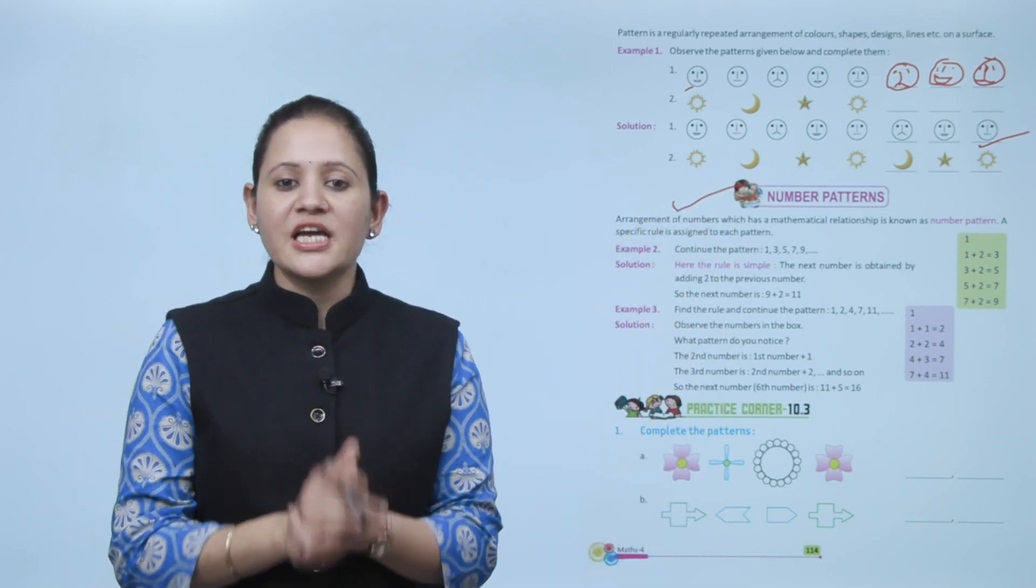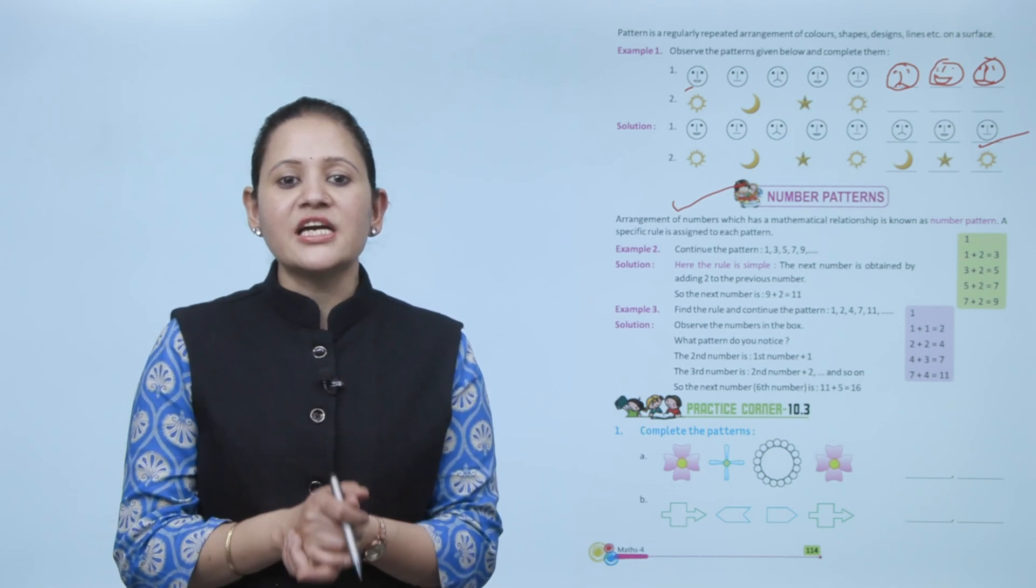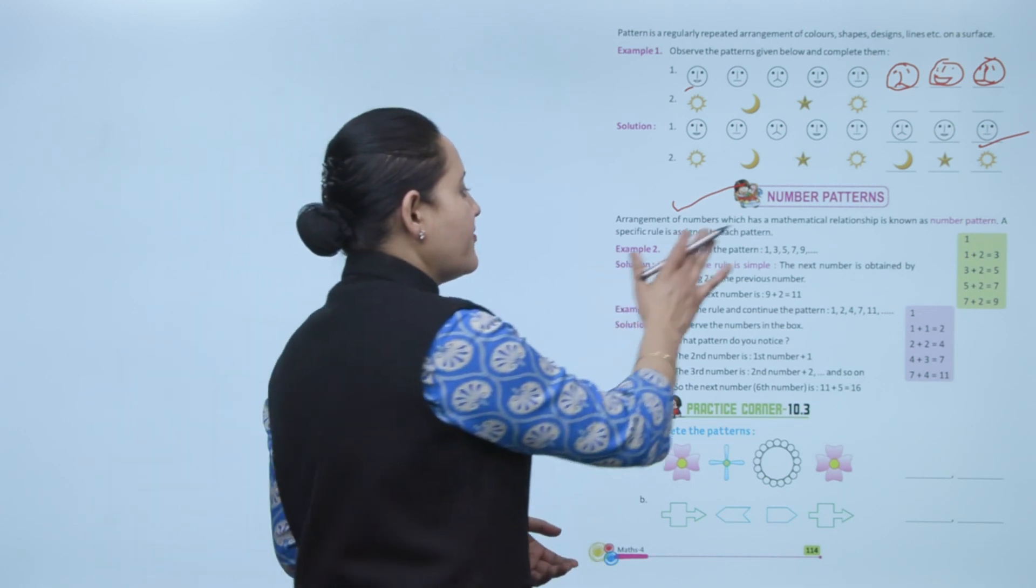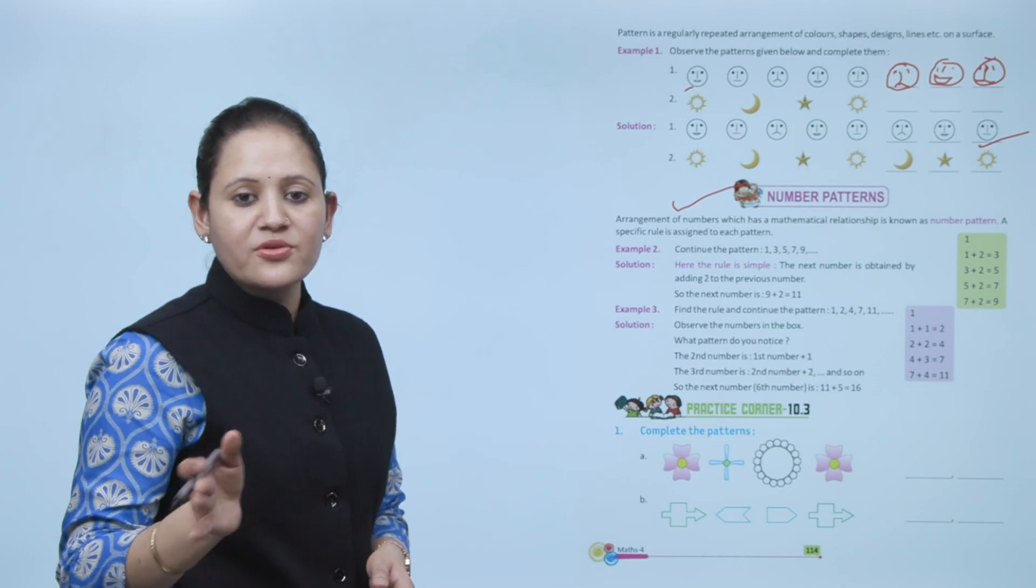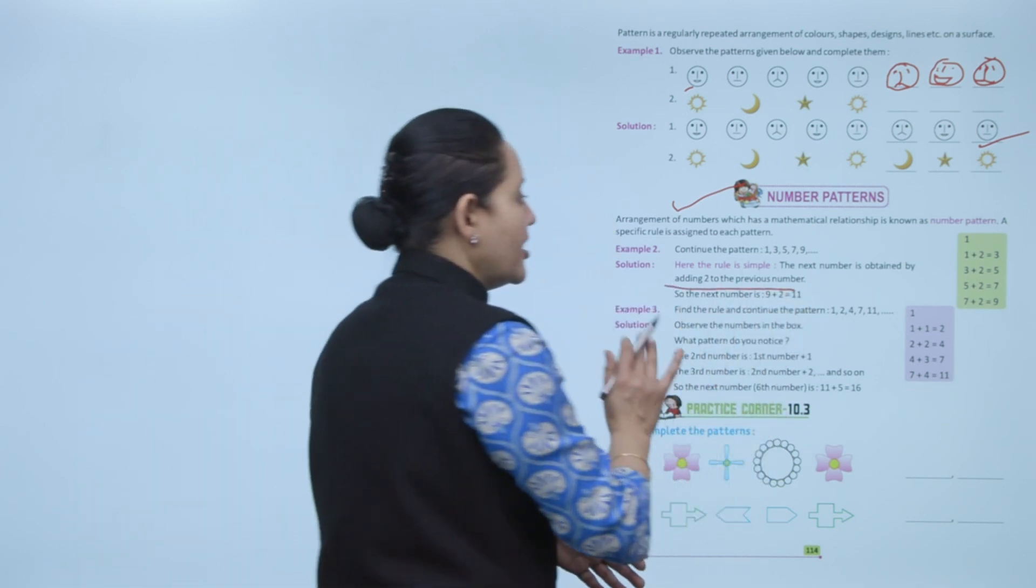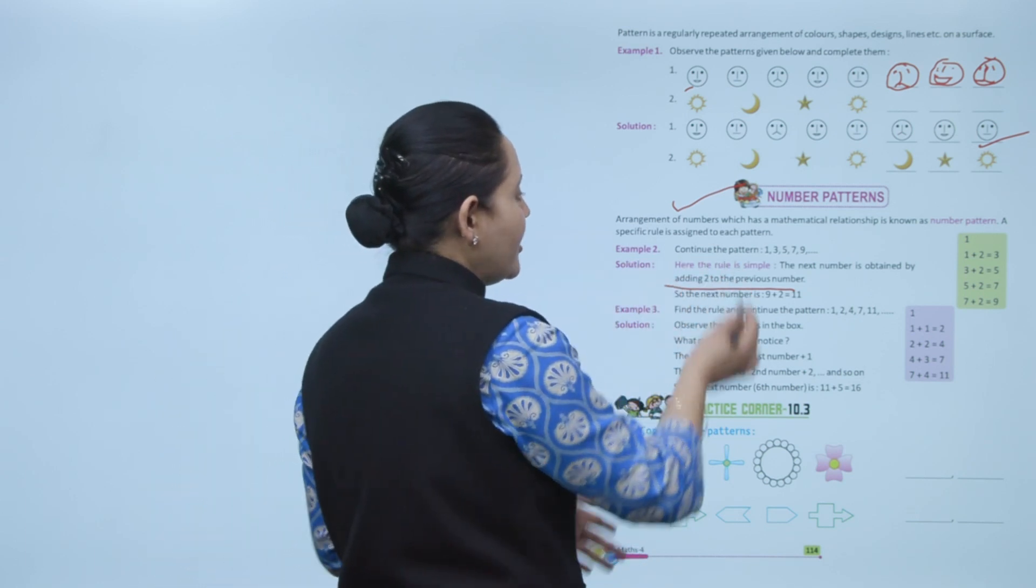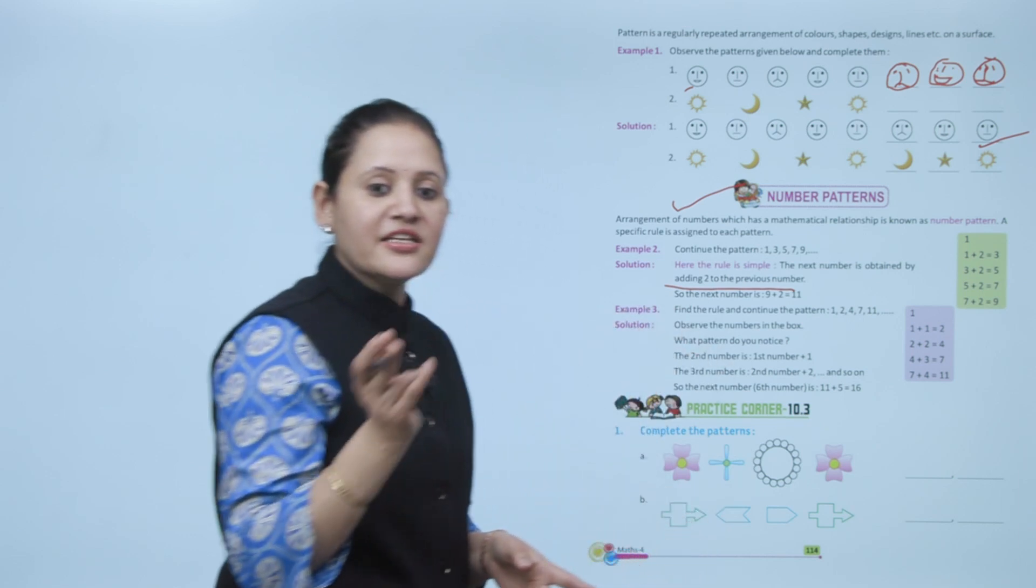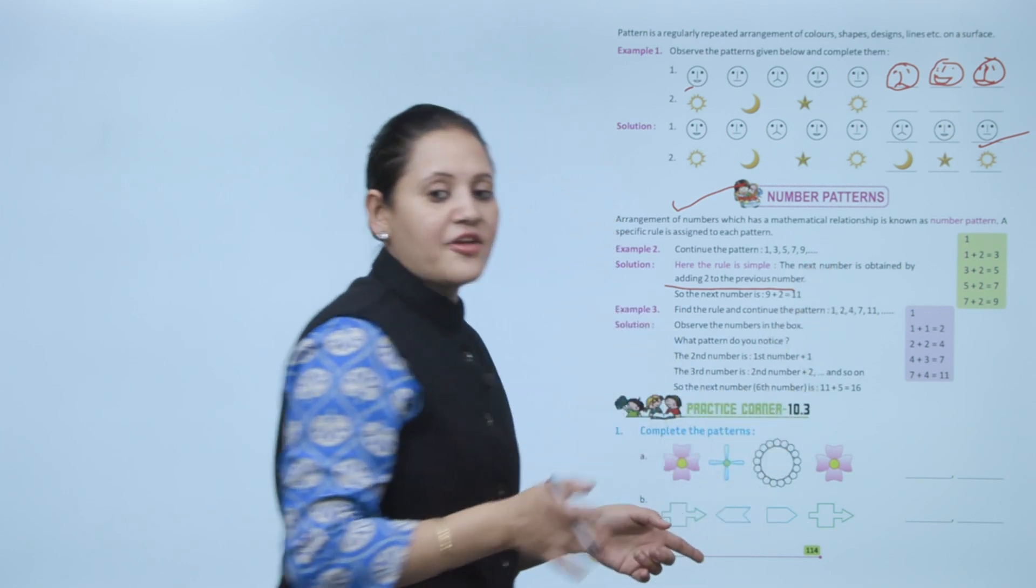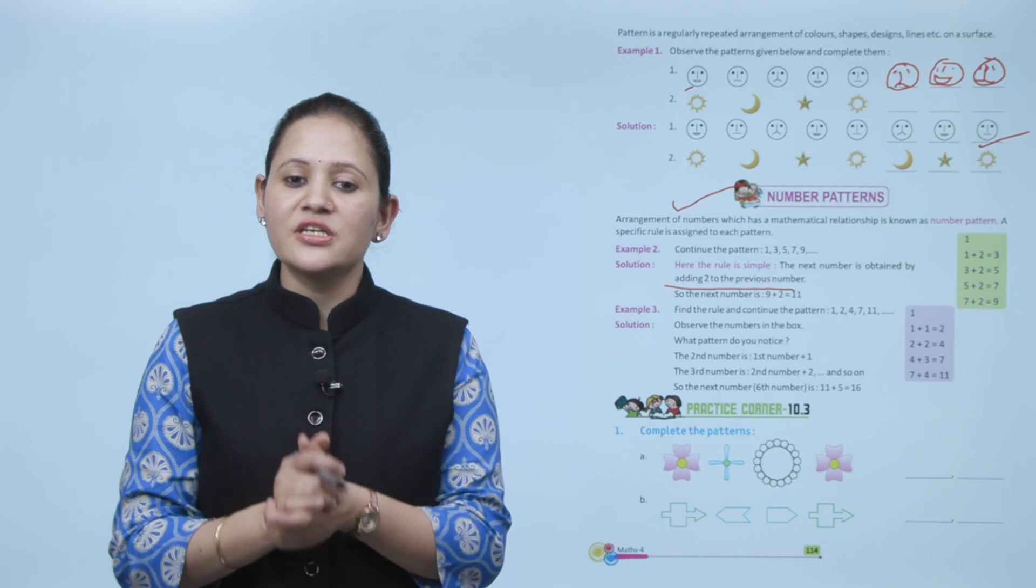Arrangement of numbers which has a mathematical relationship is known as number pattern. A specific rule is assigned to each pattern. For example, continue the pattern 1, 3, 5, 7, 9. Here the simple rule is the next number is obtained by adding 2 to the previous number: 1 plus 2 equals 3, 3 plus 2 equals 5, 5 plus 2 equals 7. If we add 2 to the previous number we'll get the next number. So the next number is 9 plus 2, that is 11, then 11 plus 2 equals 13.